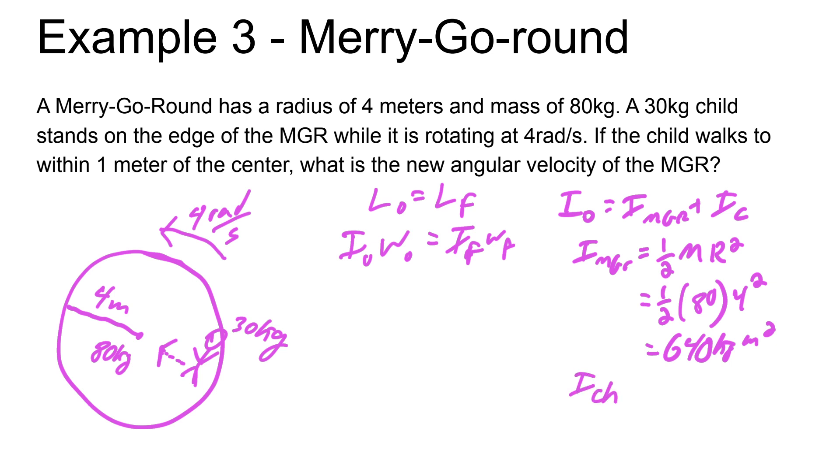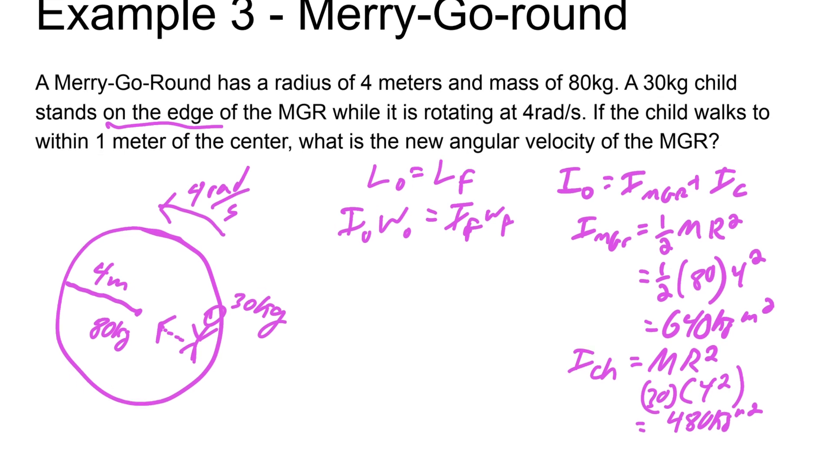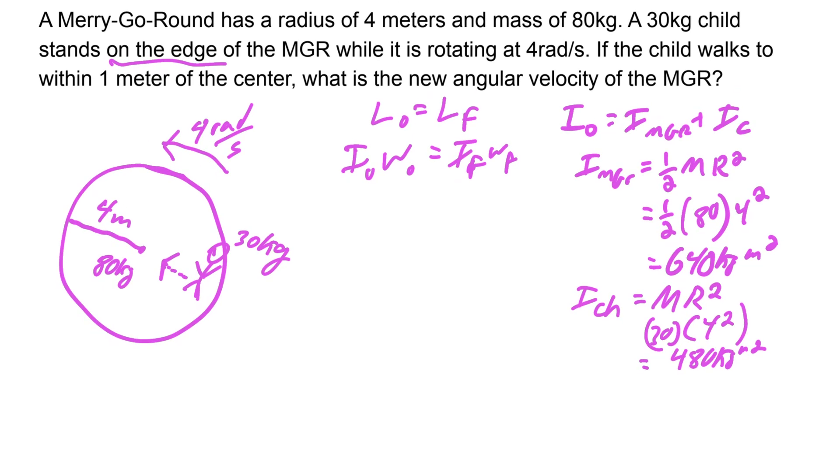That gets us 640 kilogram meter squared. Then the I of the child. The child is a point mass, so we're going to go MR squared for that one. The mass of the child was 30 and R, the child was on the edge, so we assume that's also 4. That gets us 480 kilogram meters squared, so that gives us a total of 1,120. That's our I initial.